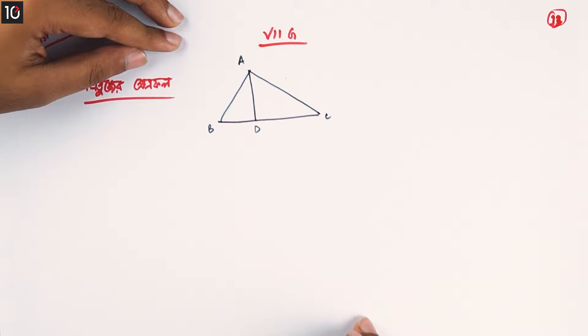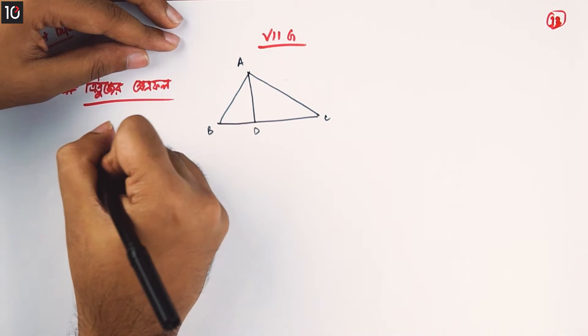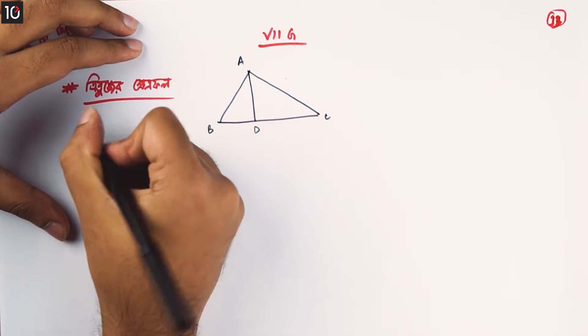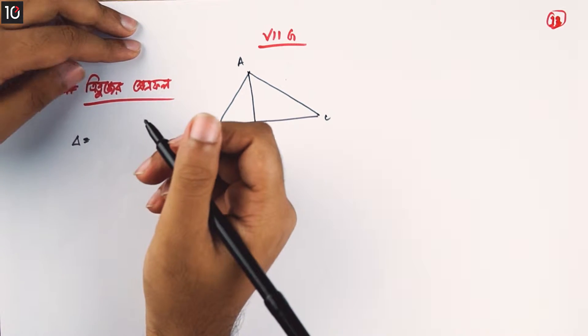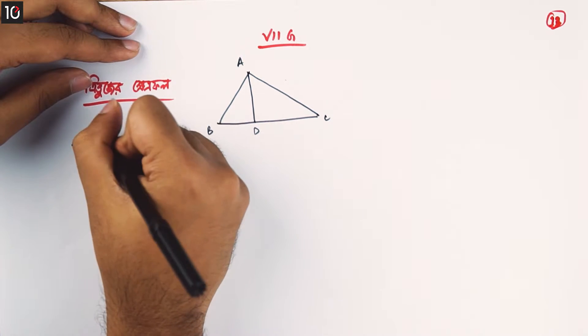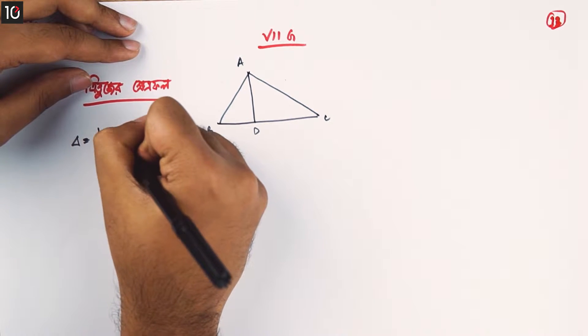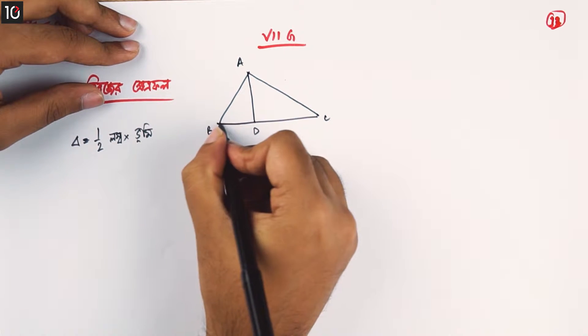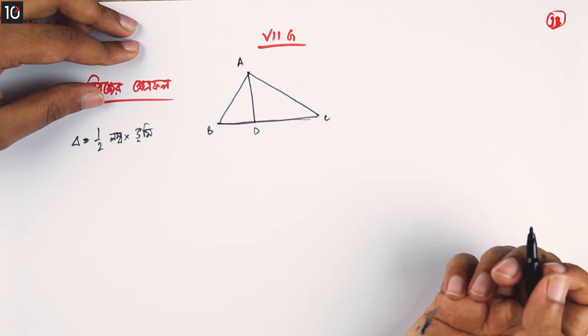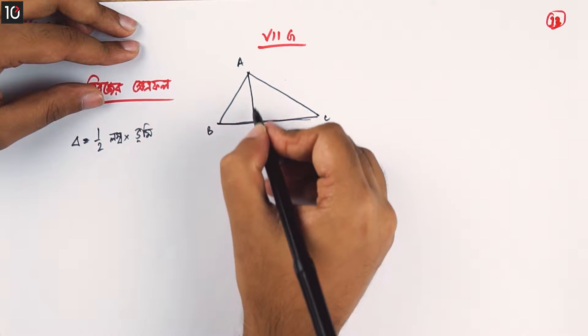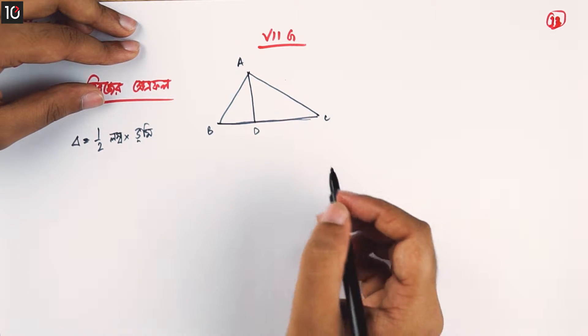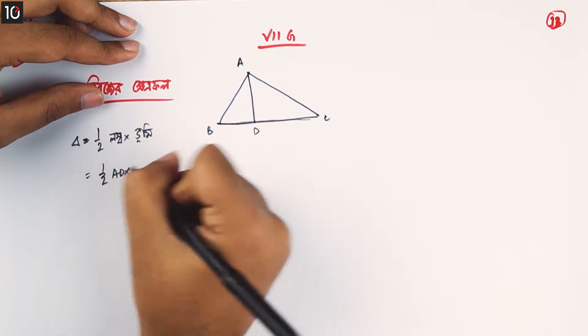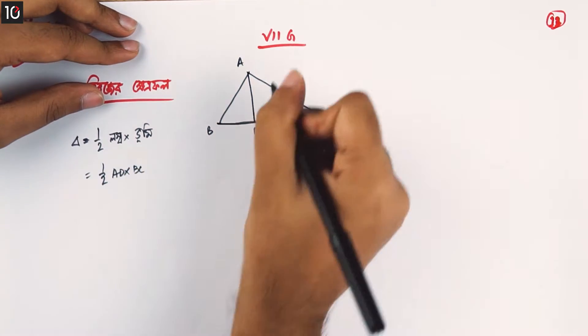We have one question about this using Chetrafol. We said half into lomba times bhoomi. That means we have BC and then we have lomba, which we have to use. Half into AD or BC, we can get the area.